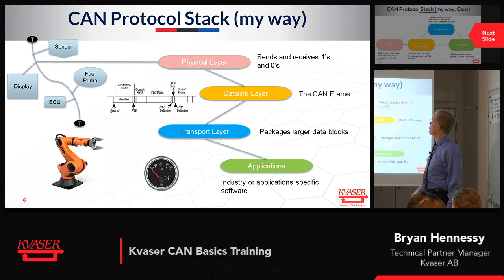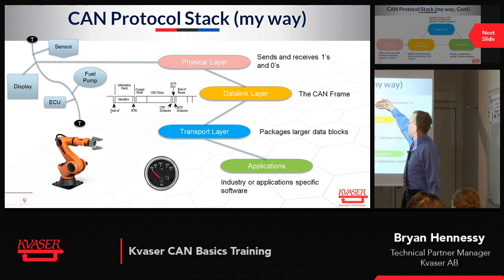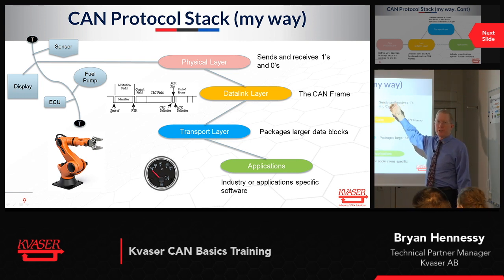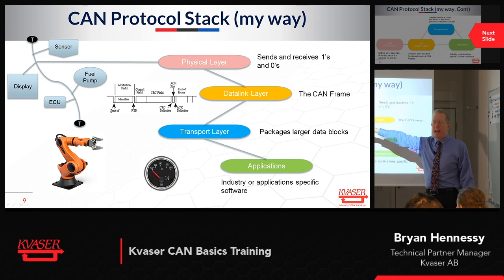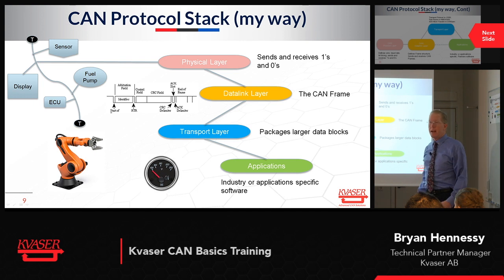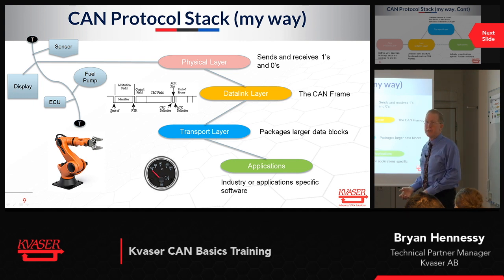That's part of what I call the physical layer. The best way to understand the physical layer is that its job is no more than getting ones and zeros from one device to the other on that network — reliably sending ones and zeros, which is what all digital communications works on. That's its whole job. It doesn't have anything to do with the frame, the protocol, J1939, or CANopen.